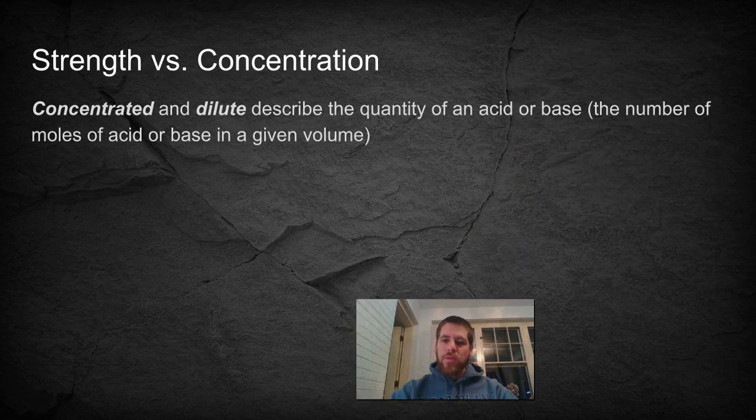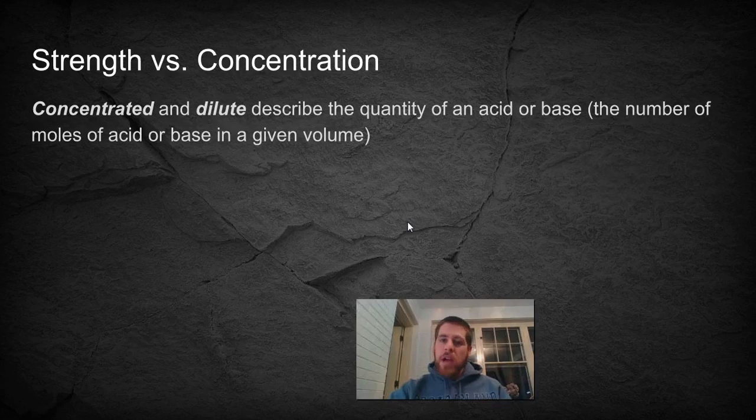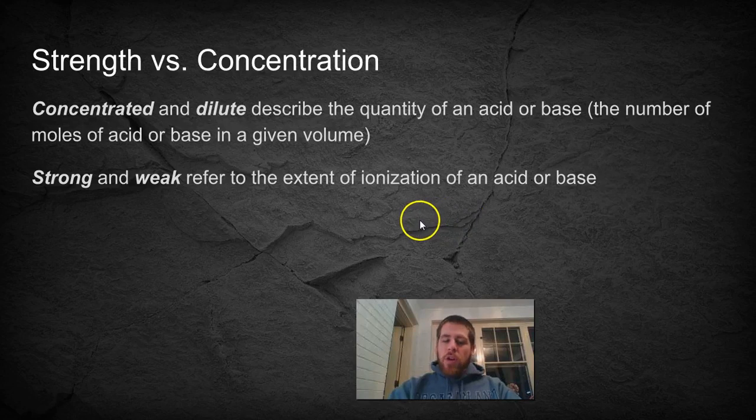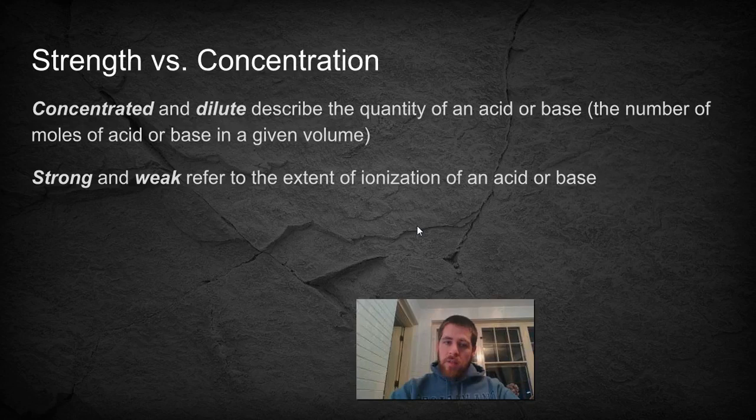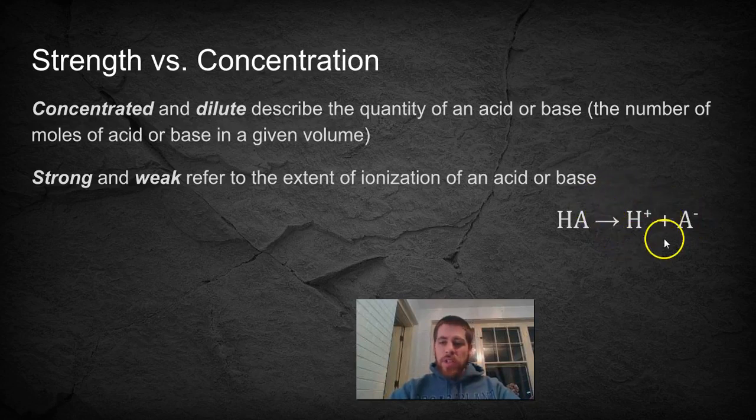Now strength versus concentration. This is a really important concept that you absolutely have to have down. How concentrated or how dilute a solution is refers to how much of it you have, the density or the molarity of the solution. Strong versus weak in the context of acids and bases doesn't refer to how much of it you have. It refers to how much of it ionizes as an acid or base. So if we think of a generic acid, acids typically start with H. So this is going to ionize to H+ and A-. The extent to which this ionizes is the strength of the acid.